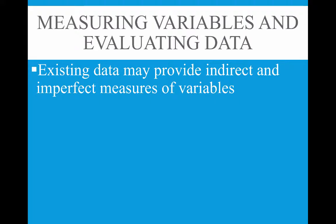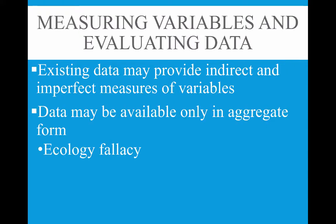When measuring variables and evaluating data, existing data may provide indirect or imperfect measures of a variable. Since the original research was not done to your specific research question, the data might not be completely accurate for your purposes. Sometimes data is only available in aggregate form, which presents problems in drawing conclusions about individual behavior.